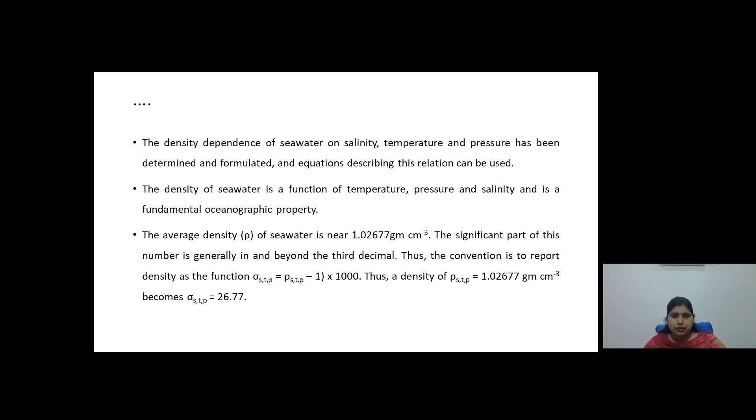How these factors affect the density of ocean water we will see later. But what is important to know is that the density of seawater as I said is 1.02677 grams per centimeter cube. So generally it is very cumbersome to represent density as such. The significant part of this number is generally beyond the third decimal. The convention is to report the density as the function of sigma as a function of salinity, temperature and pressure. Where 1 is subtracted from the density of ocean water and the resultant is multiplied by 1000. So if I say that the density of ocean water is 1.02677 grams per centimeter cube, then sigma becomes 26.77. So representing it in a number is easier compared to representing it in the form of density.